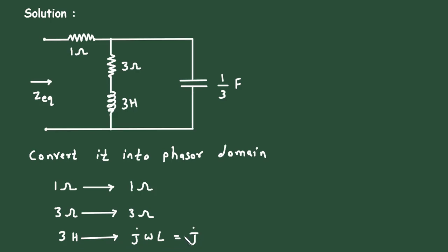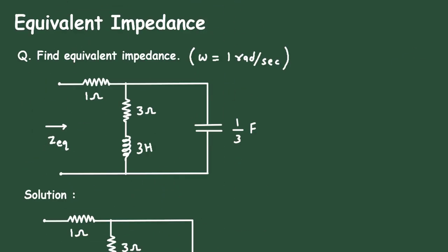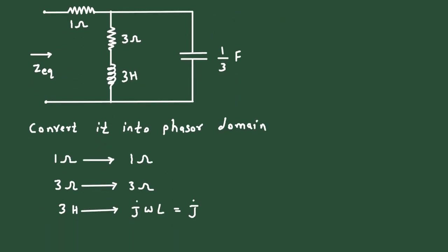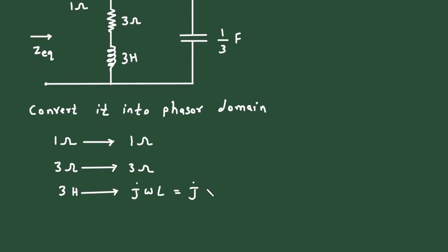j into omega — the omega value is given in the problem as 1 radian per second. So, 1 into inductance value 3 gives us 1 into 3, which equals j3 ohm.